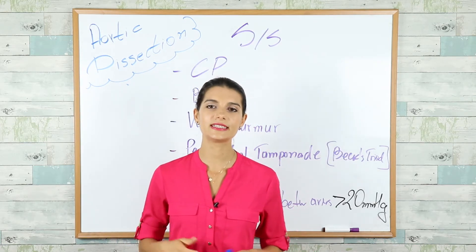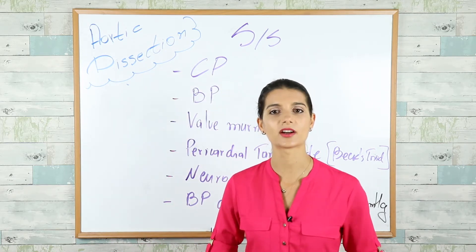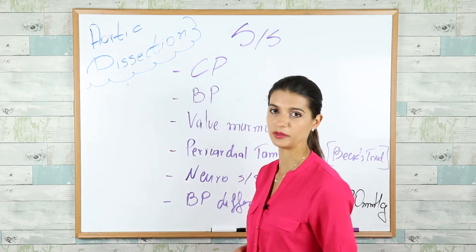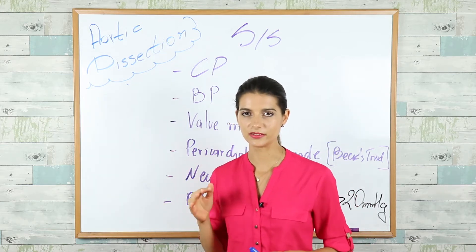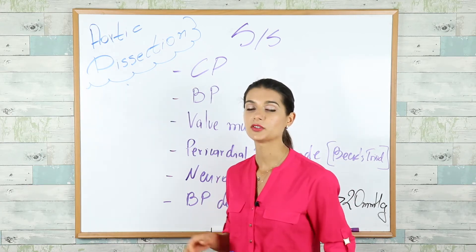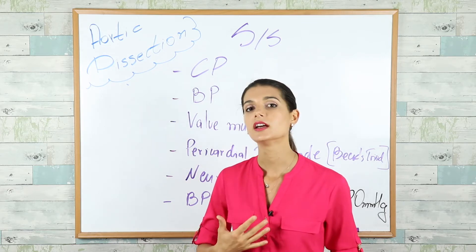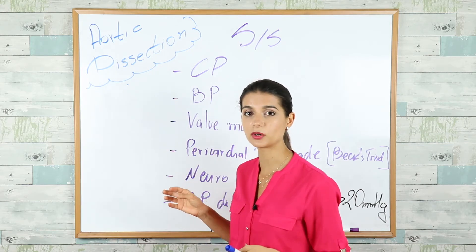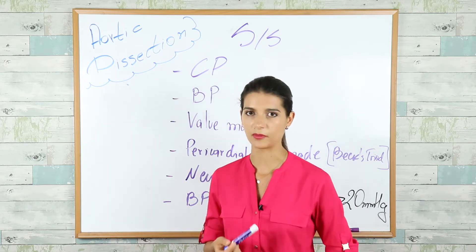Let's look at the signs and symptoms a patient with aortic dissection will present with. Starting with chest pain — it will be severe, terrible, ripping chest pain. If the ascending aorta is involved, the pain will be in the anterior chest radiating to the neck. If the descending aorta is involved, the pain will be more towards the back, radiating between the scapula.